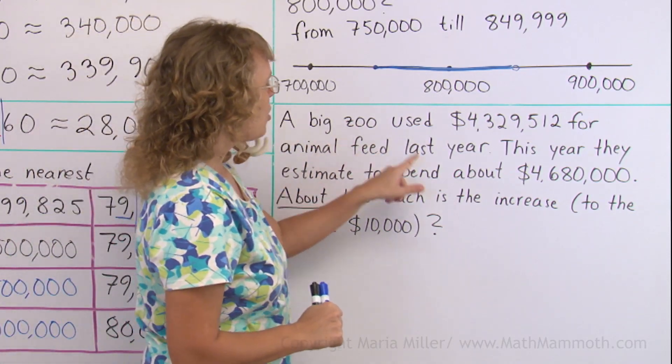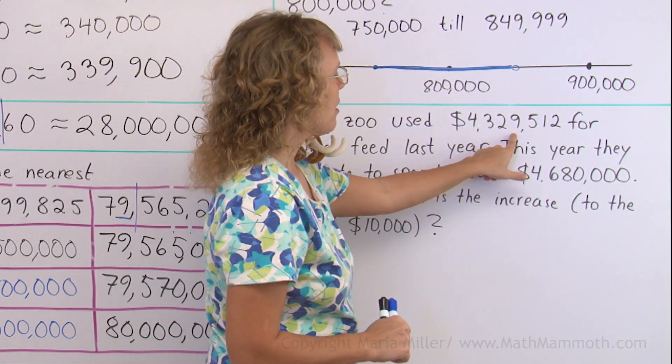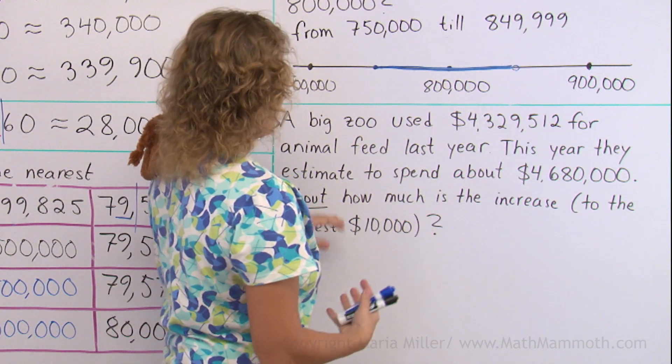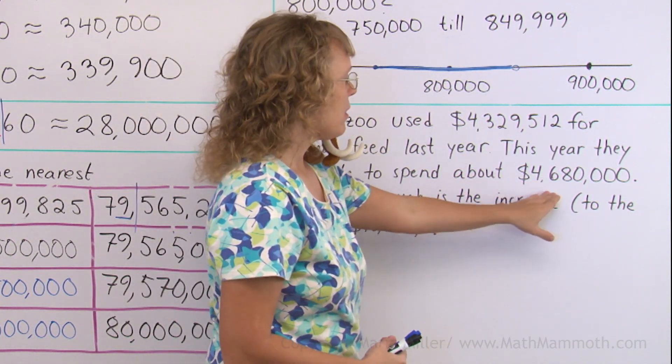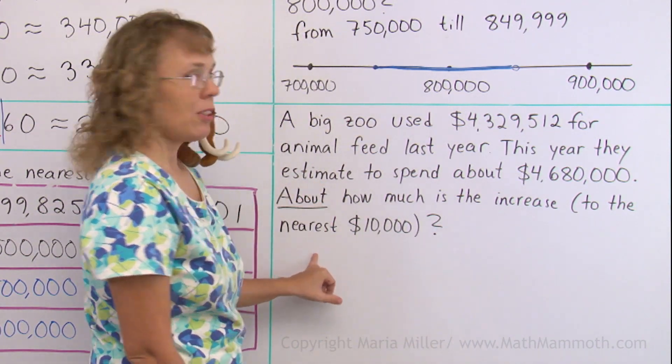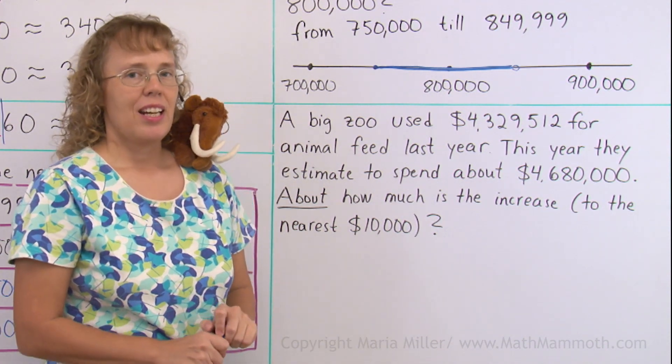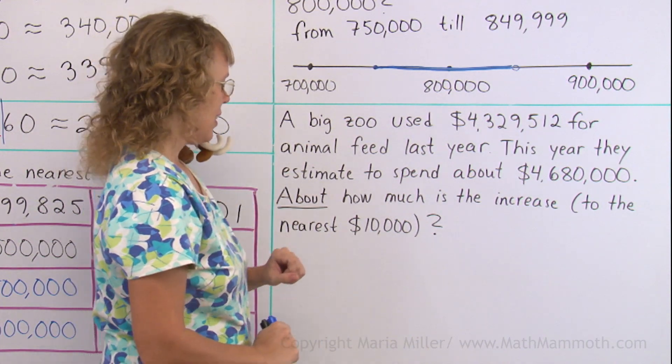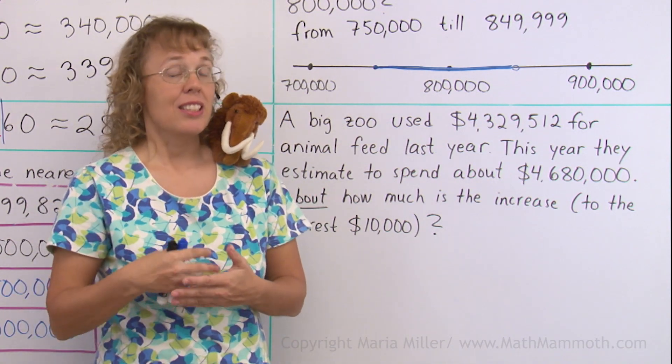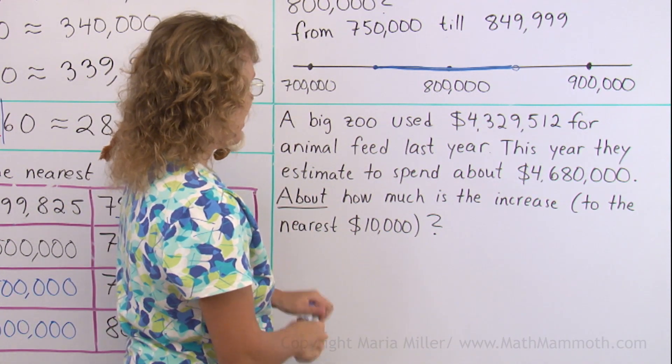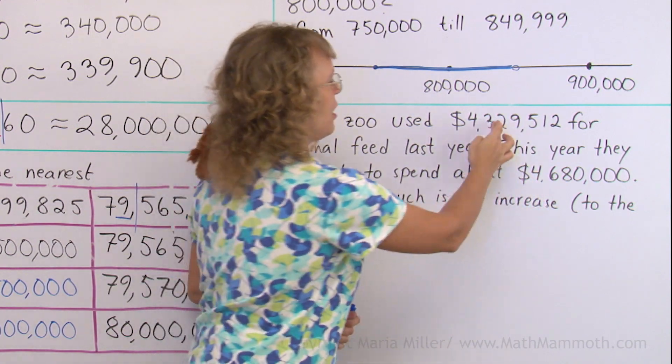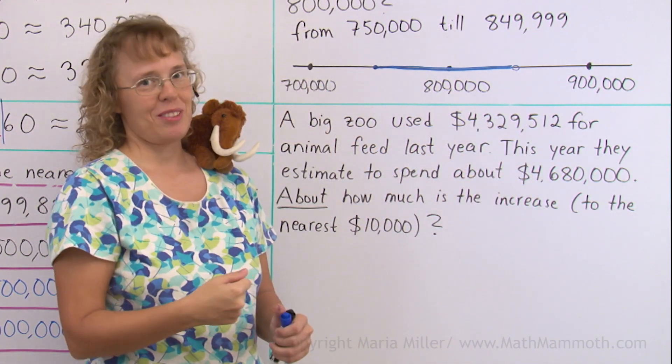Over here, a word problem. A big zoo used $4,329,512 for animal feed last year. This year, they estimate to spend about $4,680,000. About how much is the increase to the nearest $10,000? Now, it is asking about how much to the nearest $10,000. So when we get our answer, we need to round it to the nearest $10,000. And about how much is the increase in the cost of animal feed? That means we need to look at the difference, right? So we need to subtract the numbers.